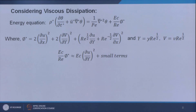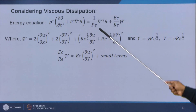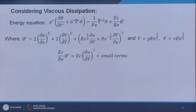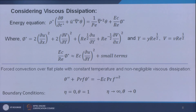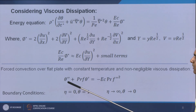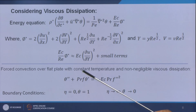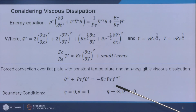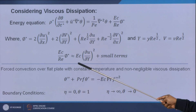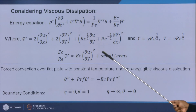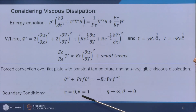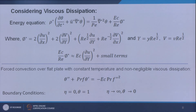Incorporating this dominant viscous dissipation term into the energy equation and performing similar non-dimensionalization, the governing equation becomes: θ'' + Pr·f·θ' = Ec·Pr·(f'')². This new term arises from viscous dissipation. The corresponding boundary conditions are θ(0) = 1 and θ(∞) = 0.